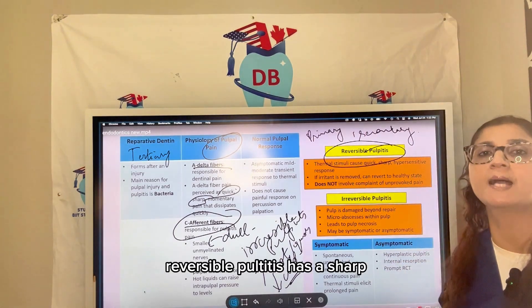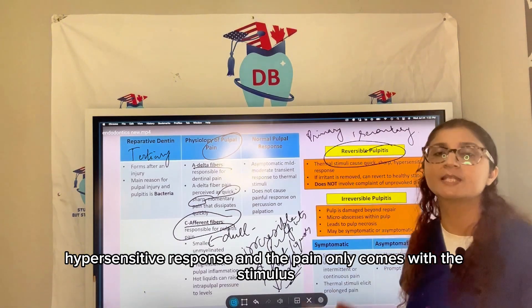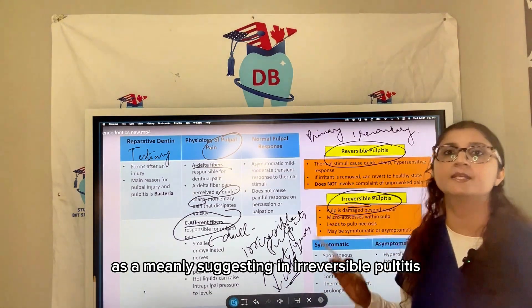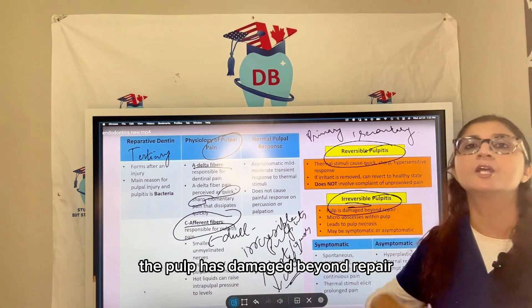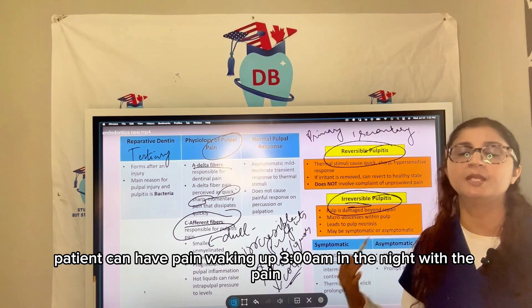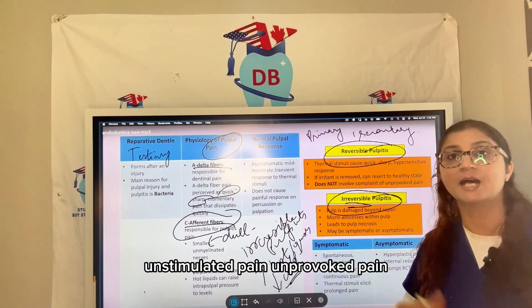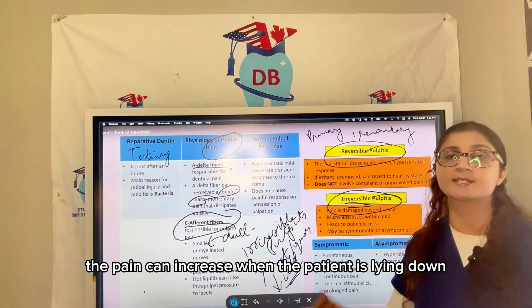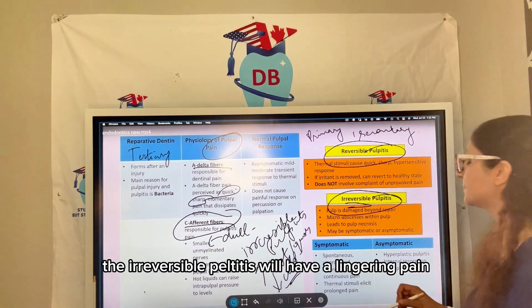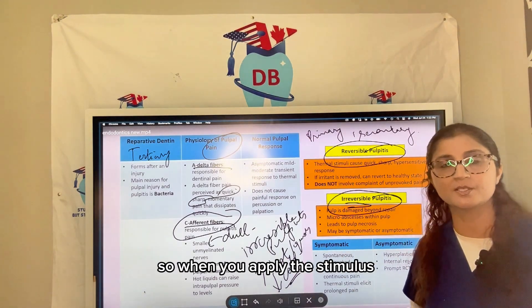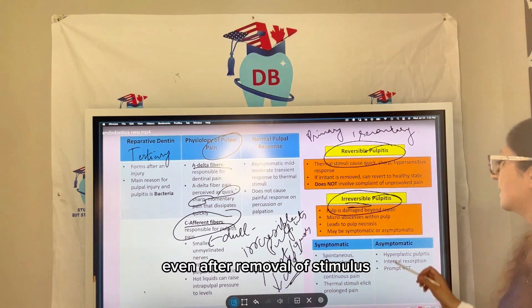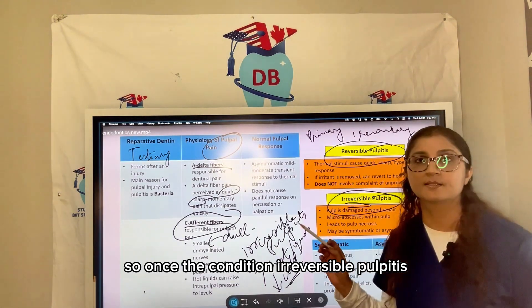Reversible pulpitis has a sharp hypersensitive response and pain only comes with the stimulus. In irreversible pulpitis, the pulp is damaged beyond repair. The patient can have pain waking up at 3 AM, with unstimulated or unprovoked pain. Pain can increase when lying down and decrease when sitting up — postural changes affect the pain. The hallmark is lingering pain: it stays for more than 10 seconds even after removal of the stimulus.